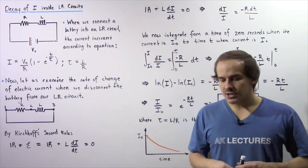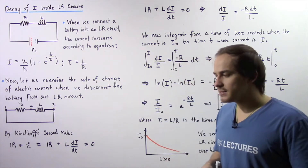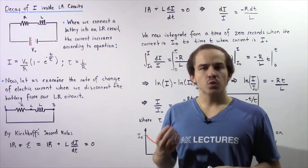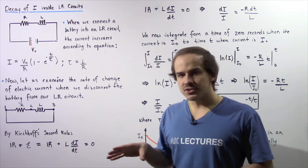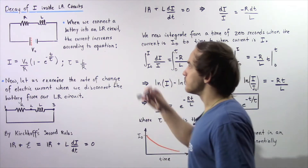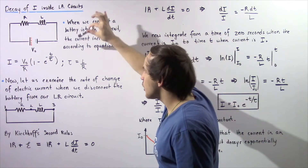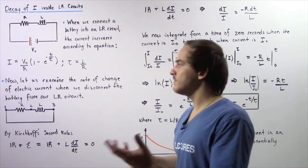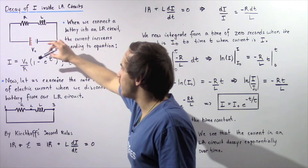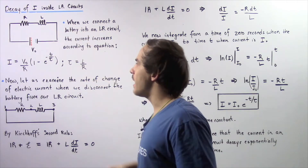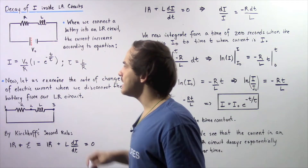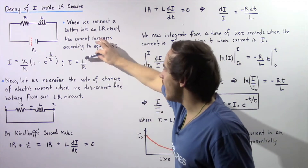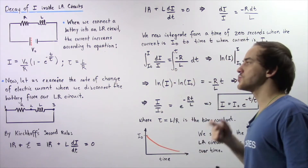In the previous lecture we began our discussion on LR circuits — circuits that contain inductors and resistors. We derived the equation that describes the rate of change of electric current when we insert a battery into our LR circuit. The current begins to increase according to: I = (V0/R) × (1 − e^(−t/τ)), where V0 is the battery voltage, R is the total resistance, and τ = L/R is the time constant.